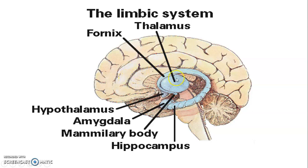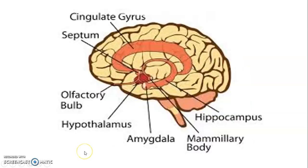Septum pellucidum. That's the hippocampus and the amygdala. Again, cingulate gyrus. You have septum there. Olfactory tract, olfactory bulb, olfactory tract, olfactory stria — all parts of the limbic system.